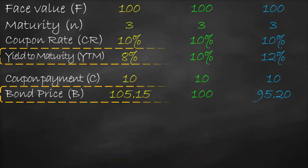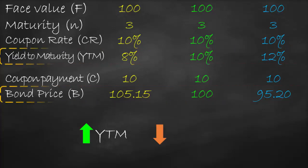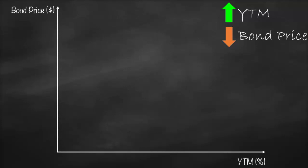Now let's compare yield to maturity and bond price. Bond price decreases when yield to maturity increases. As YTM goes from 8% to 10% to 12%, bond price falls from 105.15 to 100 to 95.20. This makes sense because bond price is based on present value: every time we increase the discount rate (the yield to maturity), the present value — or bond price — will be lower. If we draw the y-axis as bond price and the x-axis as yield to maturity, we get a downward slope, reflecting this negative relationship.